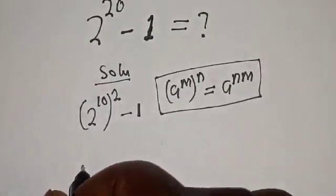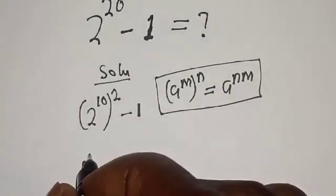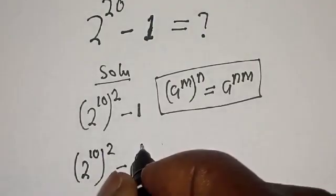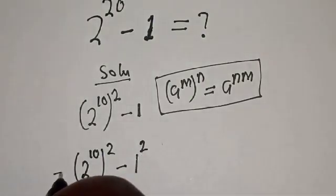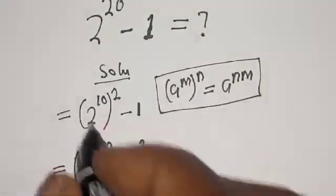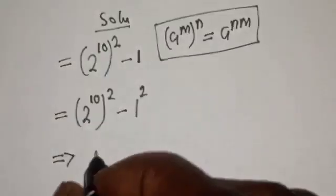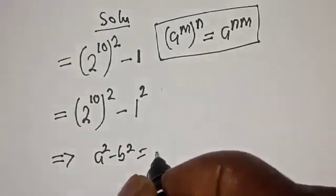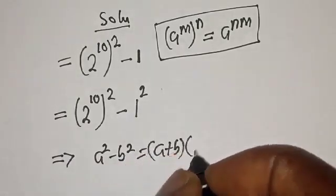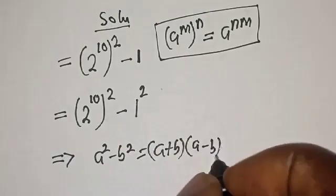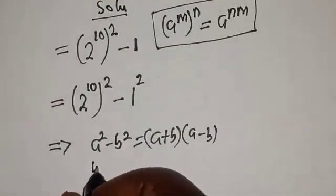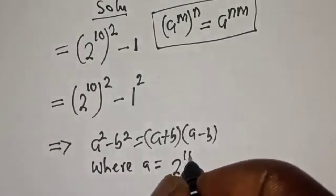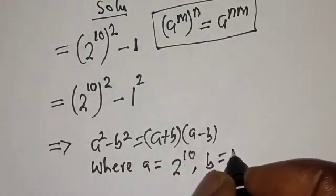So here is 2 raised to power 10 square minus 1, which is the same thing as 1 square. This is difference of 2 squares. a square minus b square is equal to a plus b multiplied by a minus b, where a is equal to 2 raised to power 10, b is equal to 1.